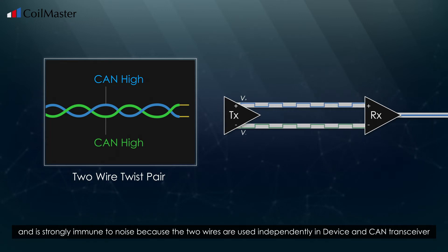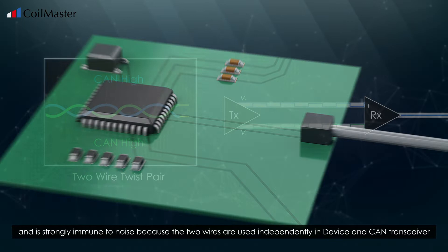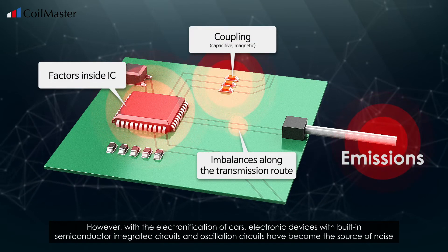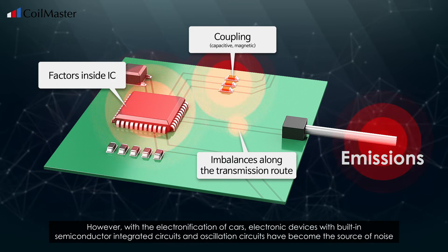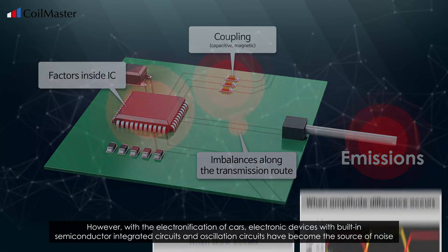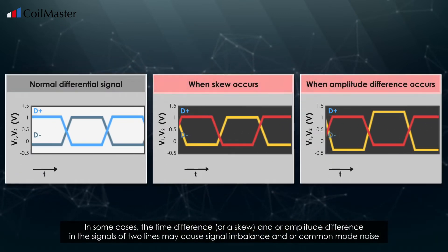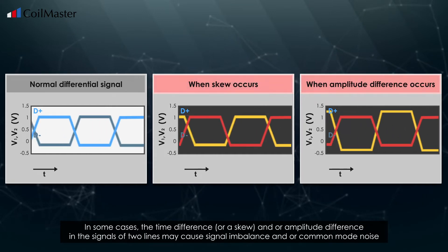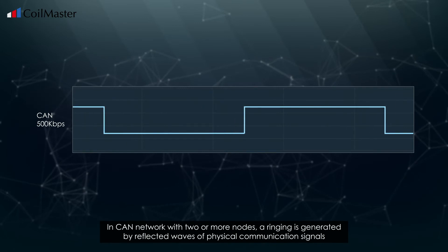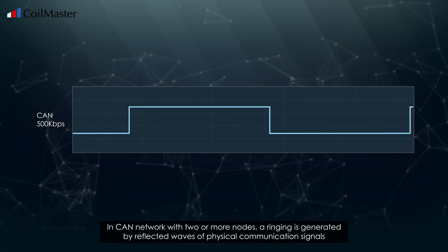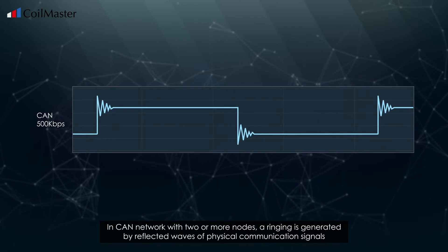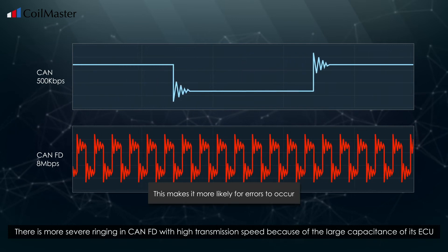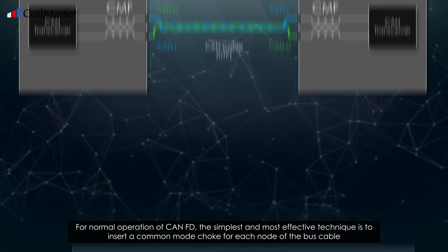However, with the electronification of cars, electronic devices with built-in semiconductor integrated circuits and oscillation circuits have become sources of noise. In some cases, time differences and/or amplitude differences in the signals of the two lines cause signal imbalance and/or common mode noise. In a CAN network with two or more nodes, ringing is generated by reflected waves of physical communication signals. This ringing is more severe in CAN FD at high transmission speeds due to the large capacitance of its ECU.